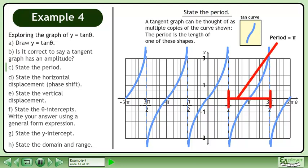The period is the length of one of these shapes. Inspecting the graph, we can see that the period of the tan graph is pi.